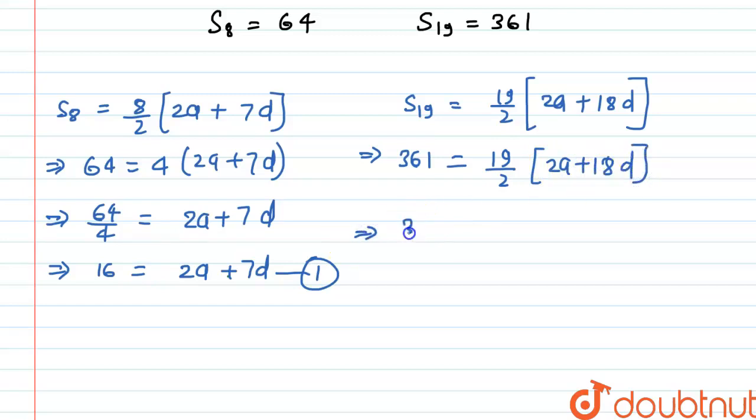Further we can also write this 361 into 2 upon 19, that is equal to 2a plus 18D. And let this is our equation number 2.